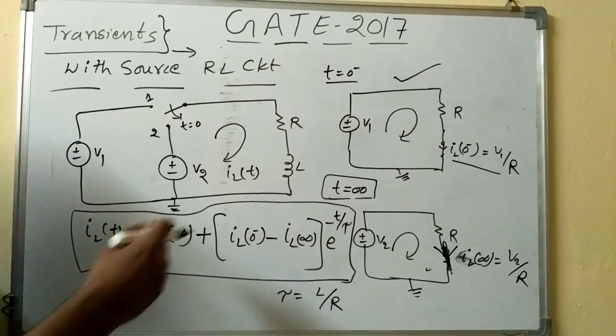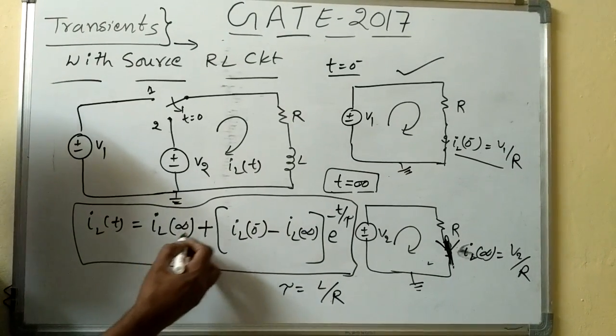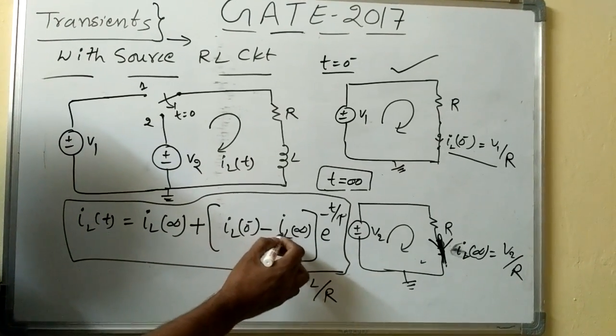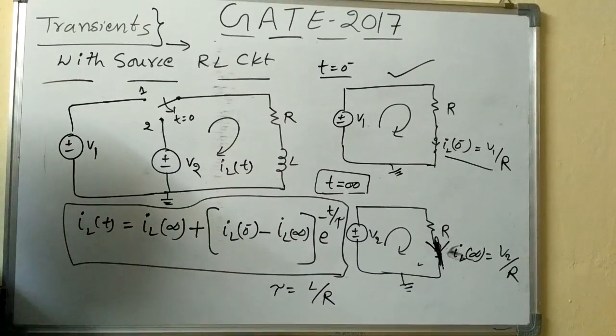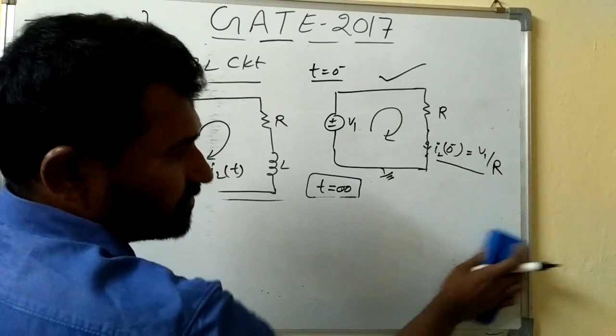So this is how to solve with the source network. So, you have to remember this expression, iL of infinity plus iL of 0 minus minus iL of infinity into e power minus t by tau. Now one more concept required here is, I hope you got this one.